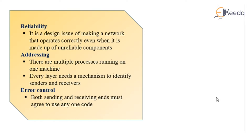Reliability: it is a design issue of making a network that operates correctly even when it is made up of unreliable components. Addressing: there are multiple processes running on one machine, and each layer needs a mechanism to identify the correct sender and the receiver.